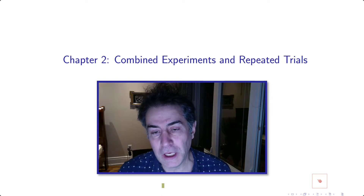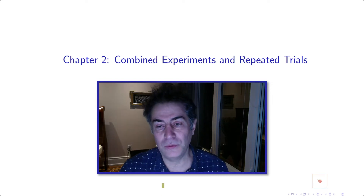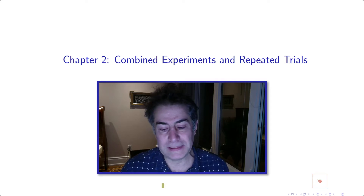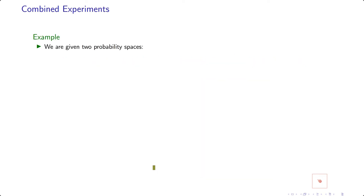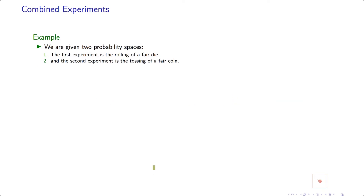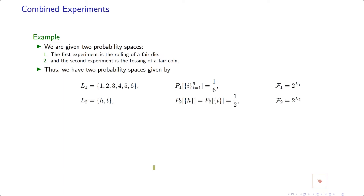If we have two different probability spaces — two different experiments — or if we repeat one experiment several times, we want to know how to mathematically address that. So we start with an example. Suppose we have two probability spaces: the first one is flipping a fair coin, and the second experiment is rolling a dice. For rolling a dice, you have L equal to the set of numbers between one to six. For a coin, you have either heads or tails.